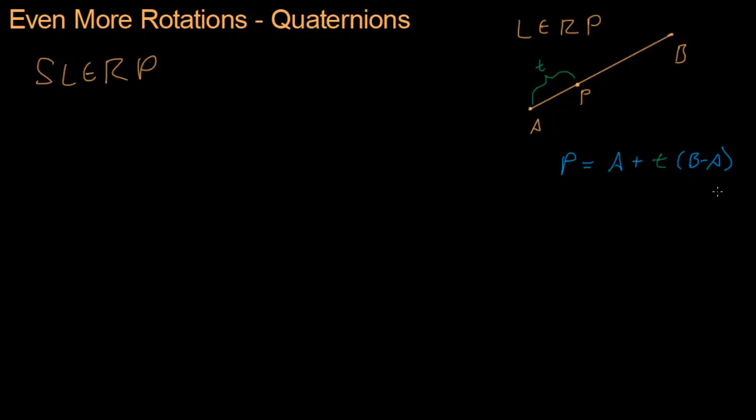Because if T is 0, then it'll zero out this entire term. If T is 1, then it'll use the entire thing, and it'll take us all the way from A to B. Otherwise, we'll just sit right there at P.